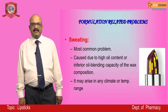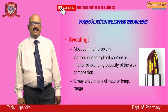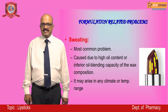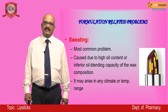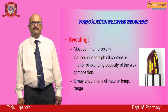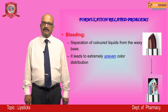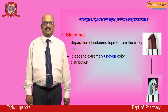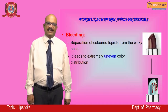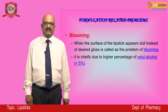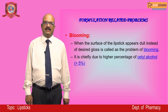Sweating is the most common formulation problem, due to high oil content or inferior oil blending capacity of the wax composition. It may arise in any climate or temperature range. Bleeding is the separation of colored liquids from the waxy base, leading to uneven color distribution when applied. Blooming is when the surface of the lipstick appears dull instead of the desired gloss — chiefly due to cetyl alcohol content above 5 percent. Stricking is a thin line or band of different color appearing on the surface, arising due to separation of suspended particles. Seams are marks left on lipsticks when split molds are used, caused by brittle masses or faulty cooling technique.